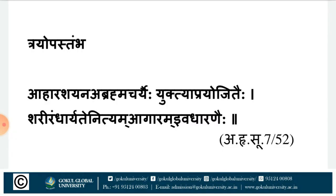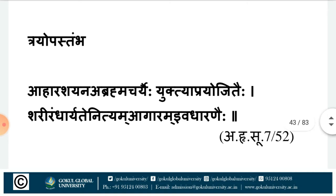Thrayobastamba — according to Vagbhata, applicable to both Ashtanga Hrdayakara and Ashtanga Sankgrahaakara — it is Ahara, Nidra and Abrahamacharya. Abrahamacharya refers to Maithuna. But according to Acharya Charaka and Acharya Susruta, this Thrayobastamba is Ahara, Nidra and Brahmacharya. The sloka is: Ahara, Shaina, Brahmacharya, Yuktyaprayojitaihi, Shariram, Dharide, Nityam, Agaram, Iva, Dharanaihi.